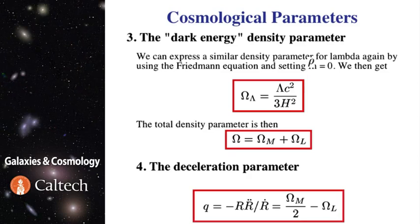It is defined from cosmological constant according to this formula. And the total matter energy density would be then simply a sum of the energy density of the matter and energy density of the vacuum.